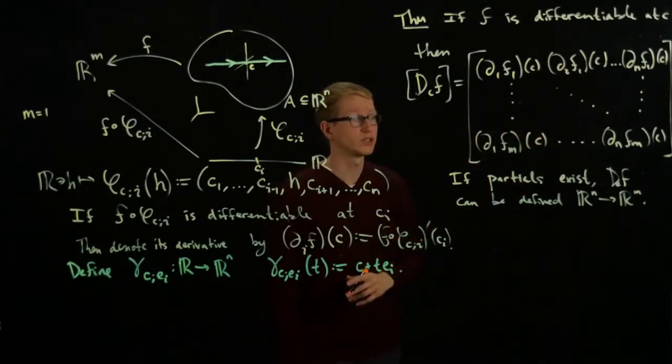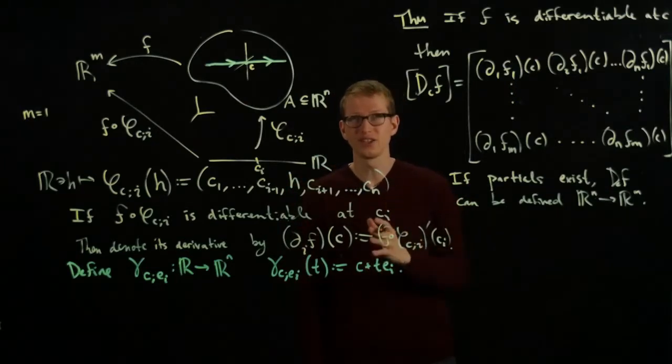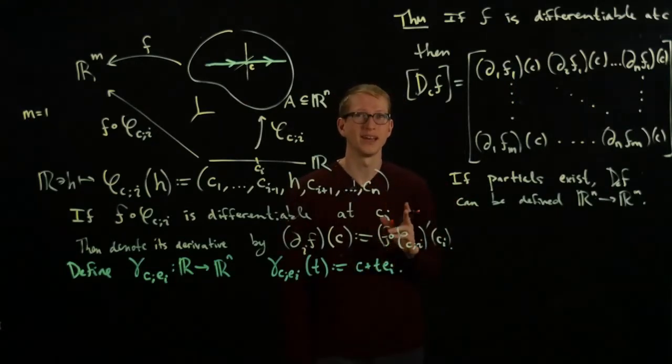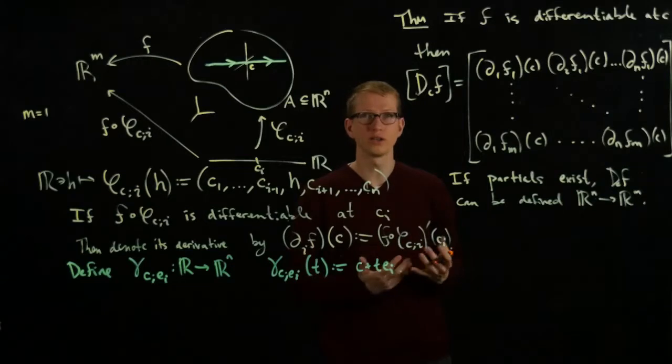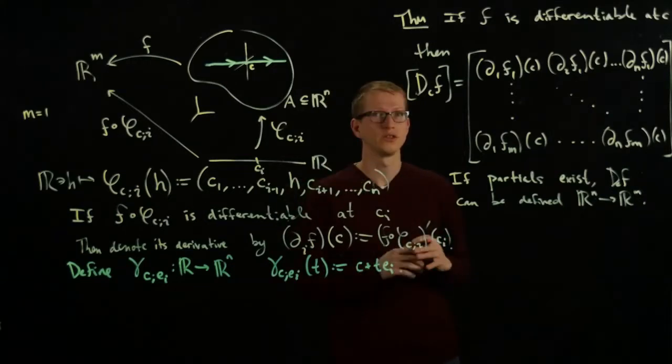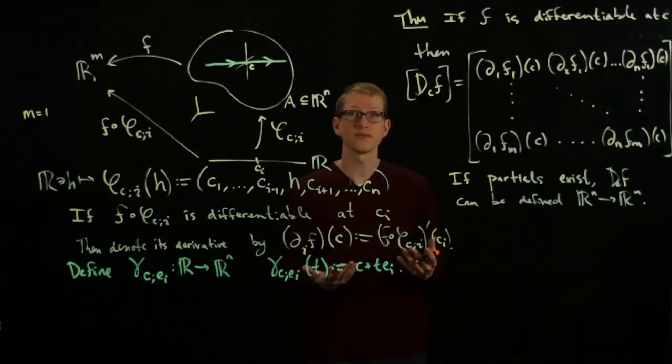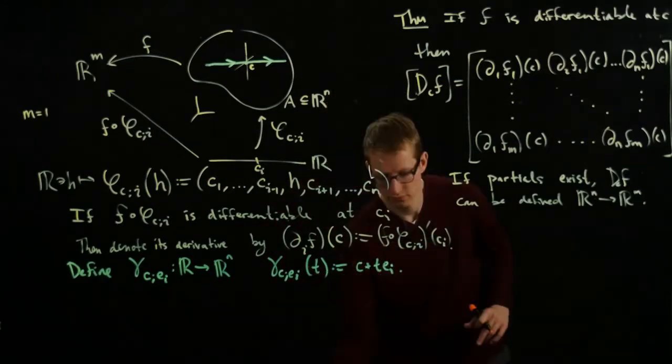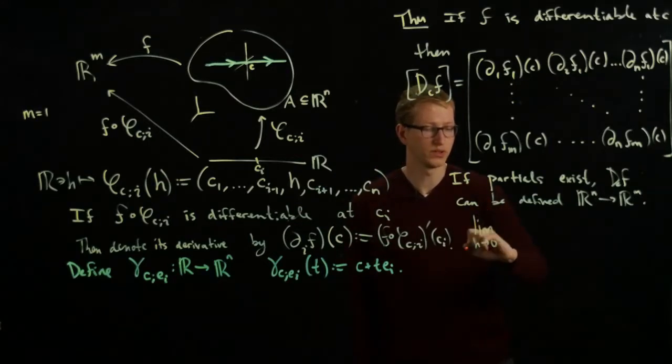There's nothing preventing us from defining this matrix if we know that each of these values exist. However, it turns out that even if the partial derivatives exist, the function F might not be differentiable at C. You might think that's strange—I've just constructed what I think is the derivative. What goes wrong?